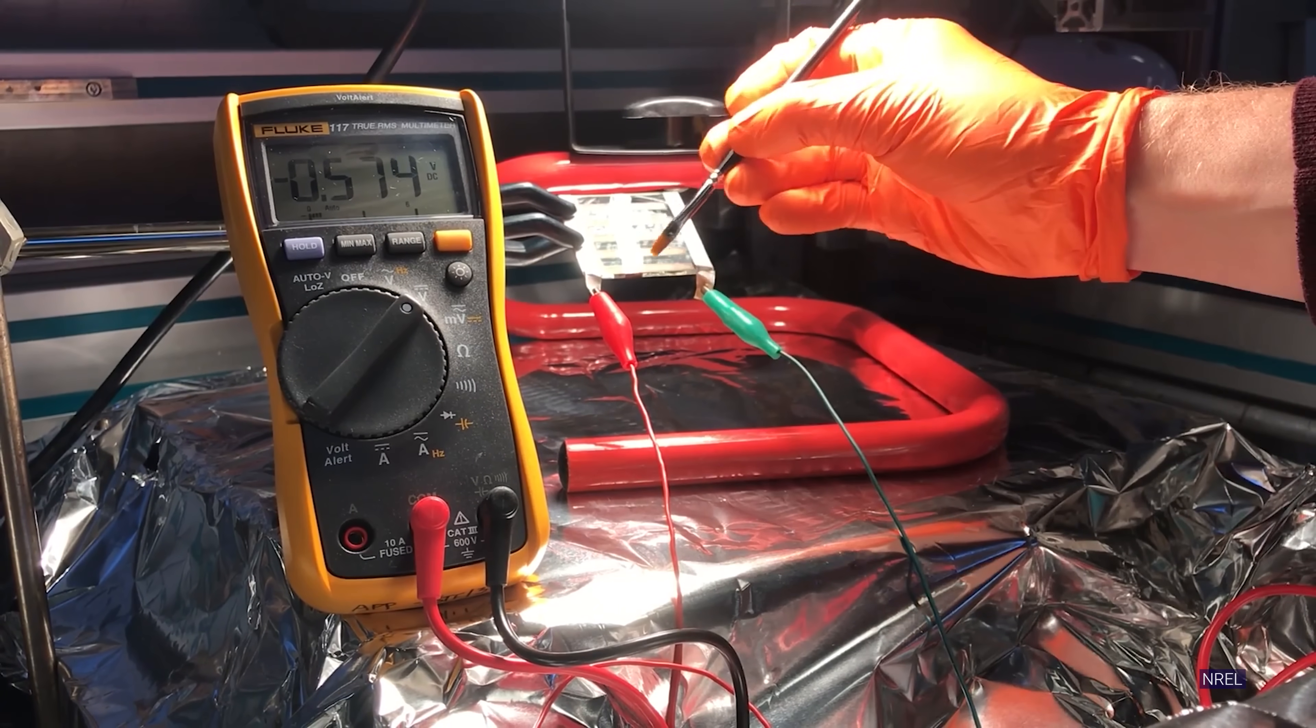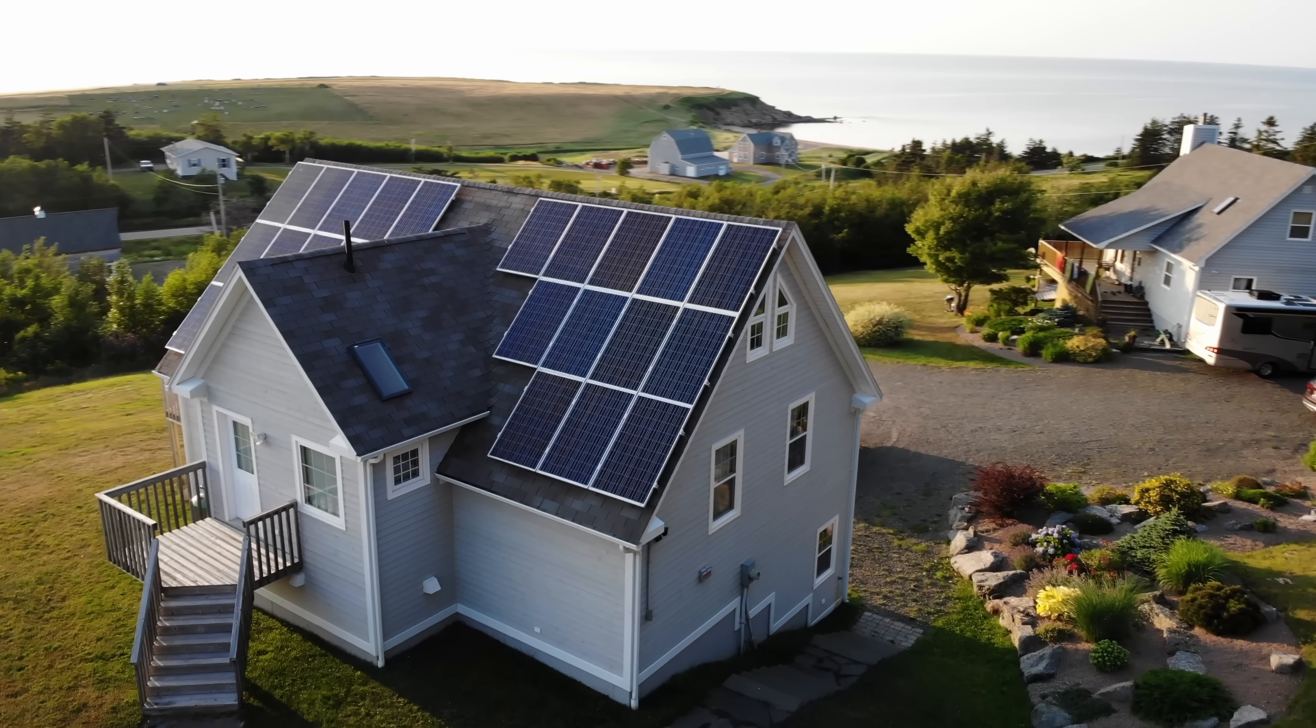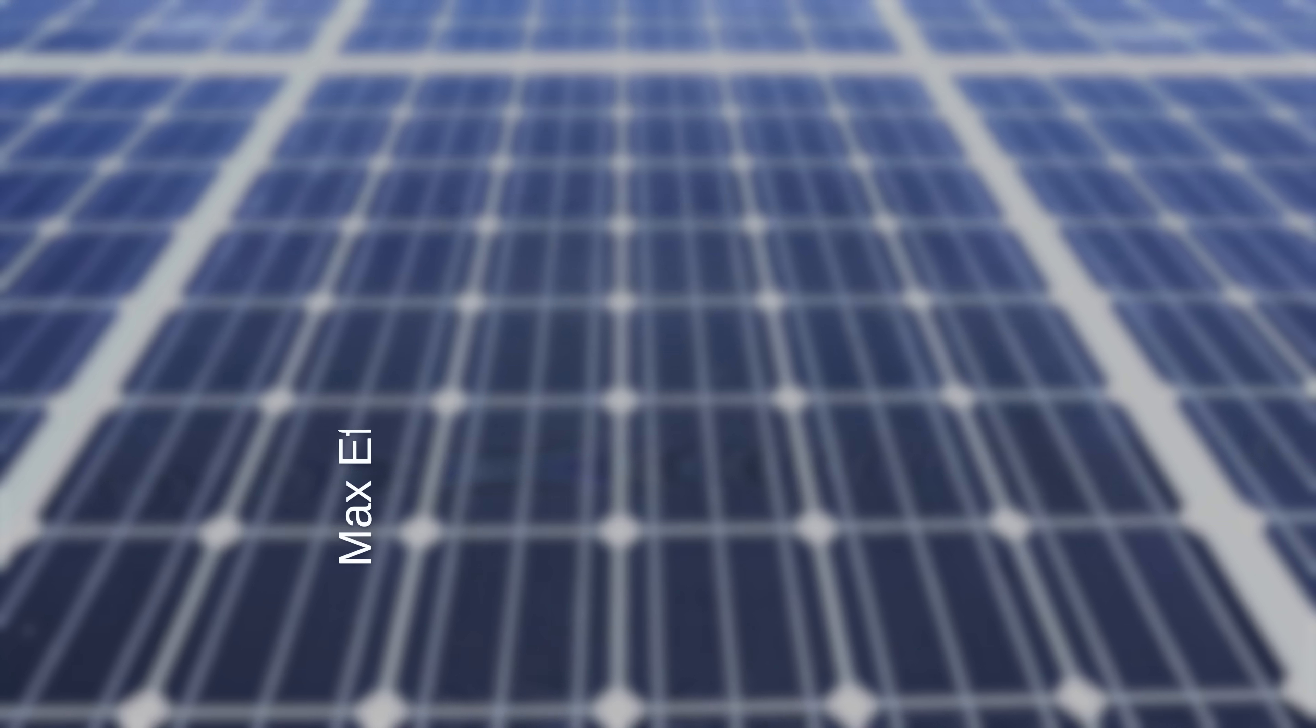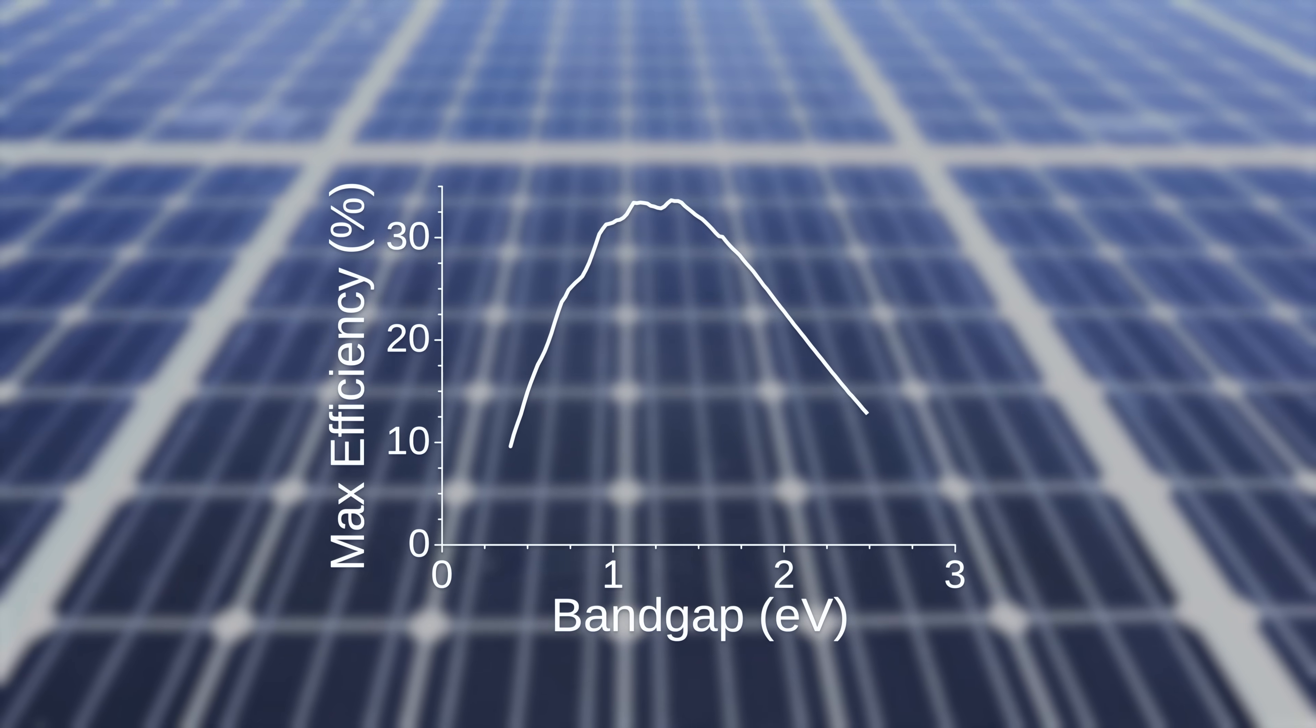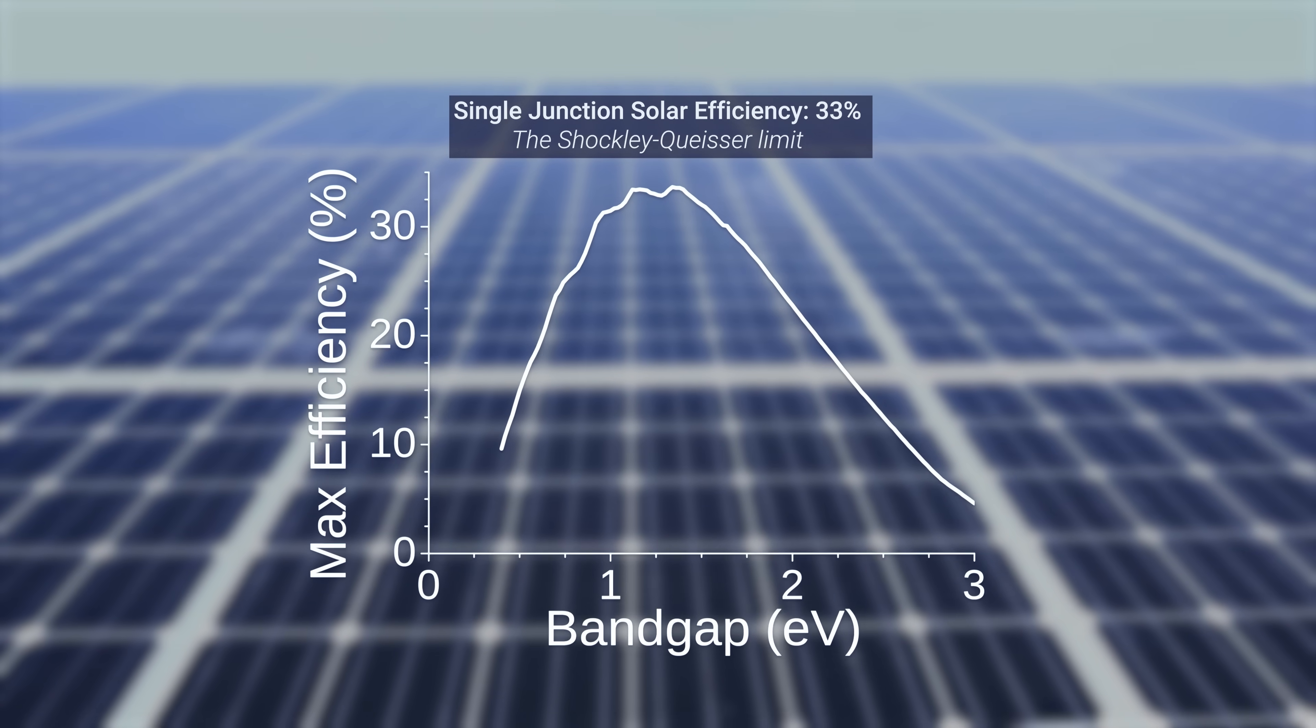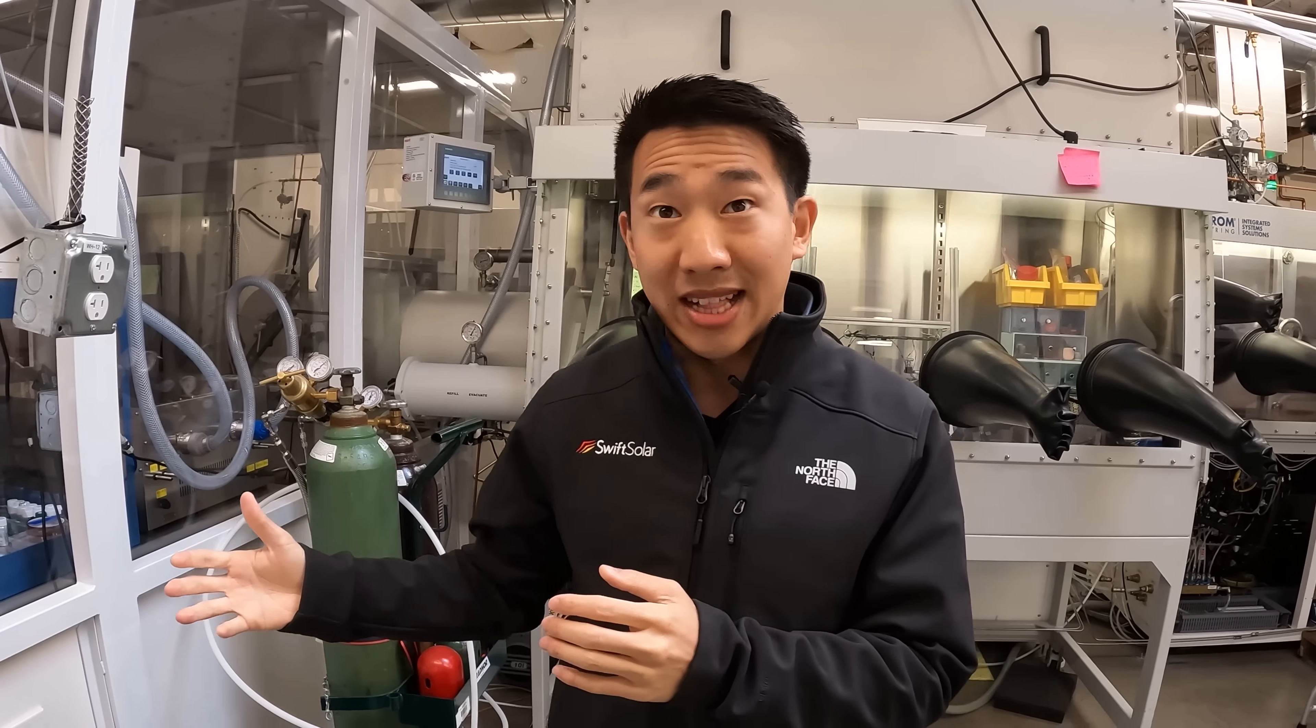So just how efficient are perovskite solar cells? The most efficient modern silicon solar panels you'd find on a home only work best at around 20% efficiency. But the theoretical conversion efficiency of single-junction solar technologies is about 33%, called the Shockley-Queisser limit.